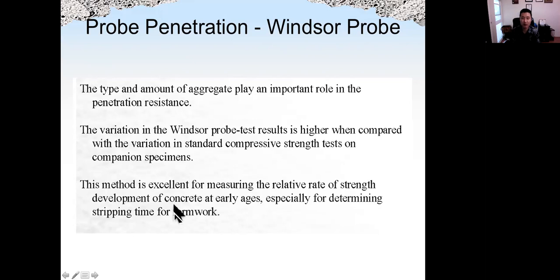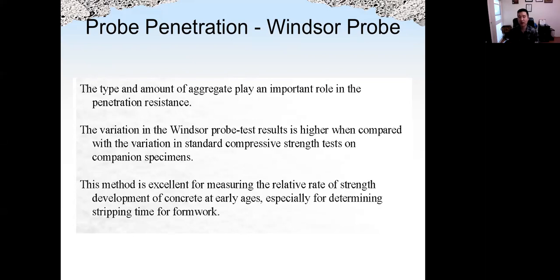This method, together with the rebound hammer, is very good for measuring the relative rate of strength development of concrete at early age. For example, we check the penetration or rebound number at one day, three days, or seven days, and we can have an idea of the strength development. Because the concrete's mix design — the type of aggregate, water-cement ratio, moisture content — does not really change, whatever change occurs in the penetration or rebound number is due to the change in strength. But again, we cannot compare different types of concrete for the penetration.